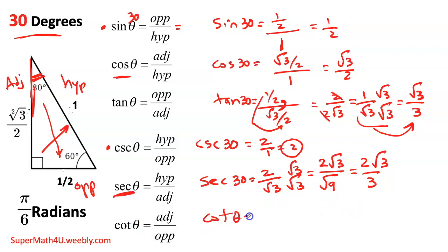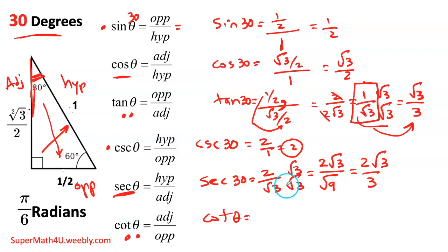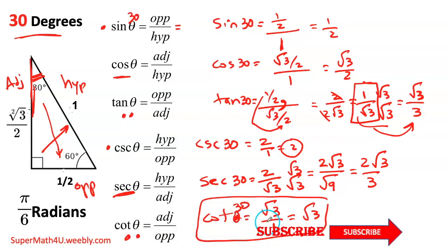Cotangent is the reciprocal of tangent — adjacent over opposite. My initial tangent answer was one over square root of three. My cotangent is the reciprocal, so I flip that — it becomes square root of three over one. Anything divided by one is the same. So cotangent of 30 is square root of three.